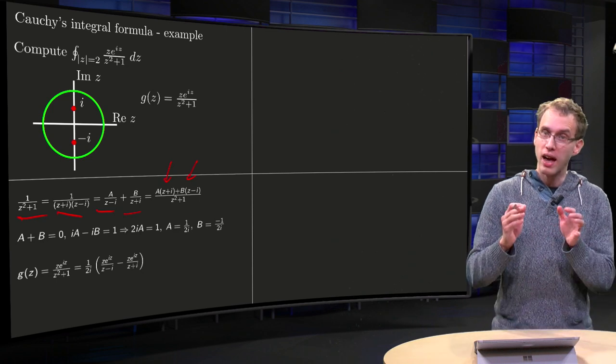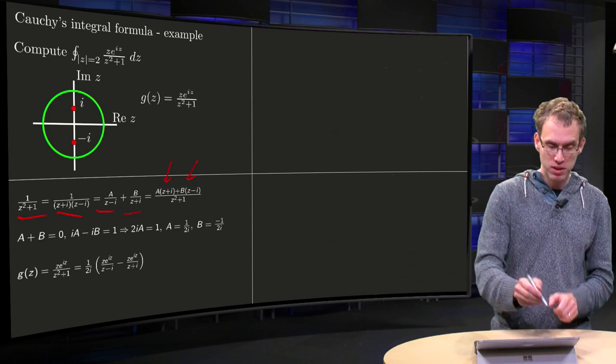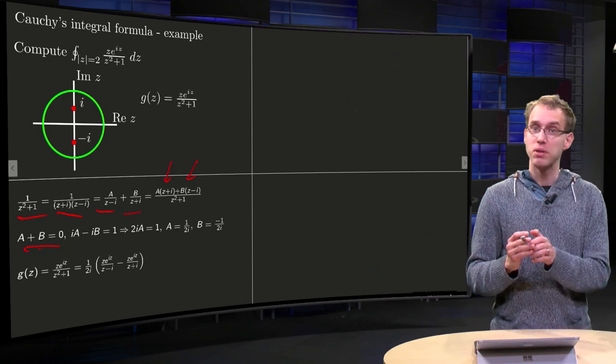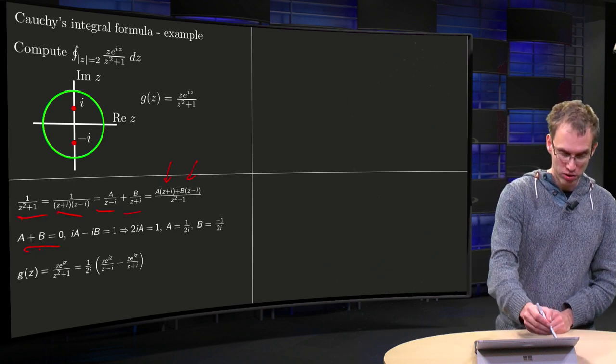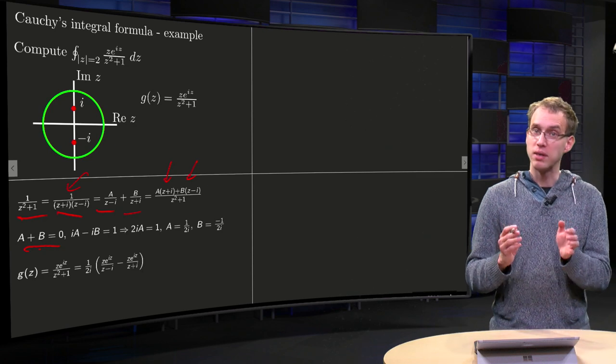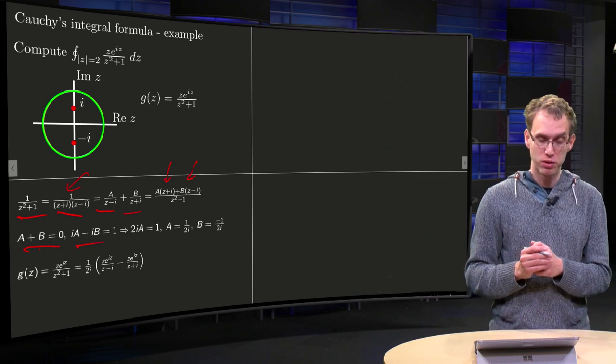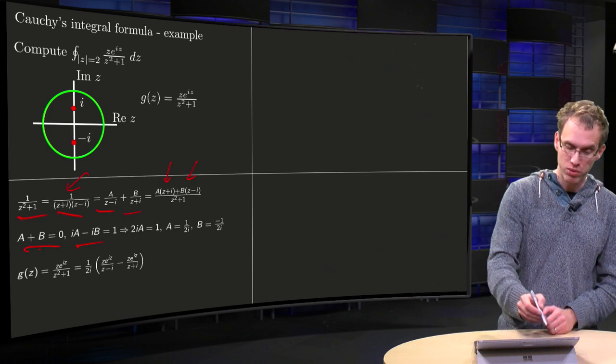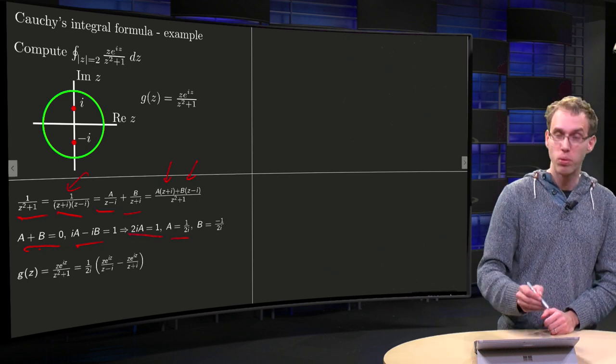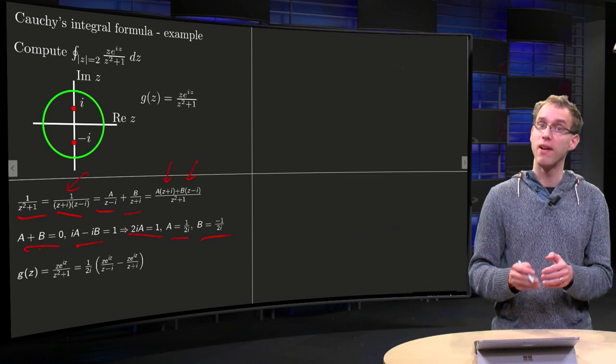A plus B times z equals zero times z, so A plus B equals zero, and A times i plus B times minus i equals 1, so i·A - i·B equals 1. Substitute B equals minus A, so you get 2i·A equals 1, or A equals 1 over 2i and B equals minus 1 over 2i.